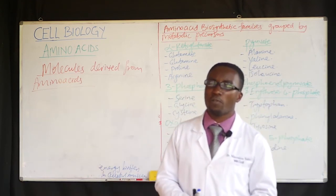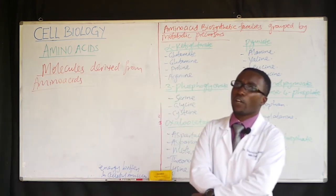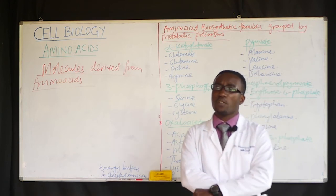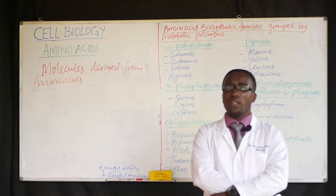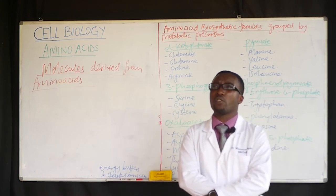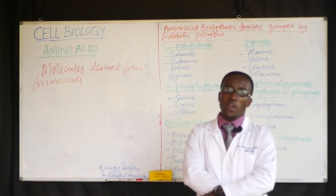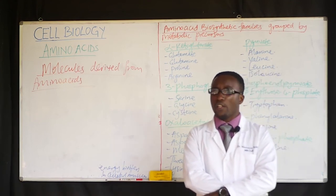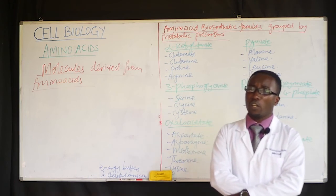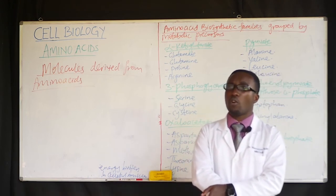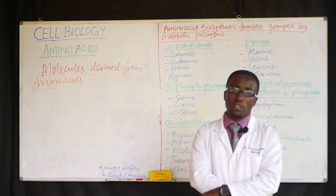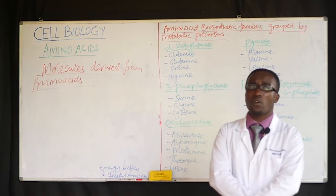Another important byproduct: methionine in the form of S-adenosylmethionine (SAM) is important as a methyl group donor. This was seen in the context of vitamin B12 (cyanocobalamin) and folic acid (tetrahydrofolic acid / vitamin B9) metabolism, where methionine acts as a methyl group donor.